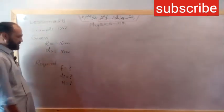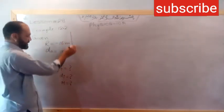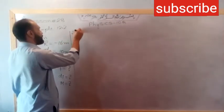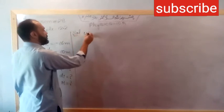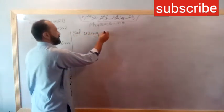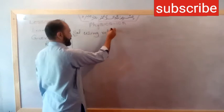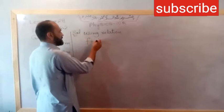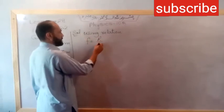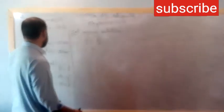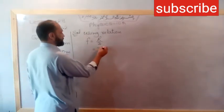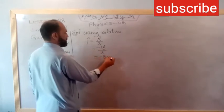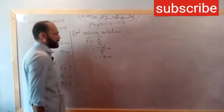The radius of curvature and focal length relation. Using the relation F equals R divided by 2. R is minus 16 divided by 2, which equals minus 8 meters.